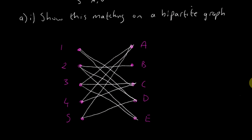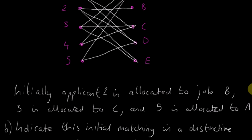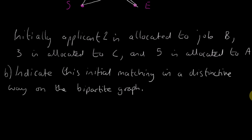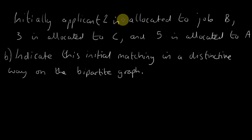Welcome back to the second part of this question. Initially, applicant 2 is allocated to job B, 3 is allocated to C, and 5 is allocated to A. They want us to indicate this initial matching in a distinctive way on the bipartite graph.